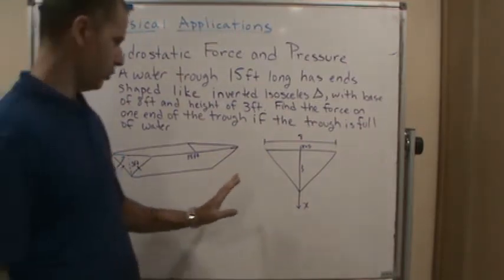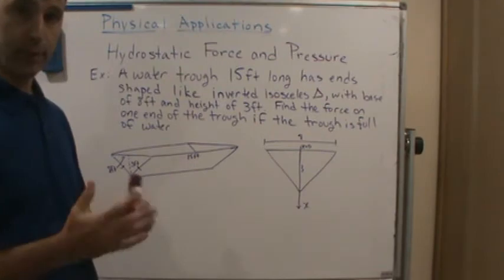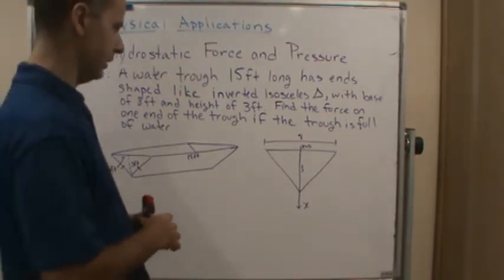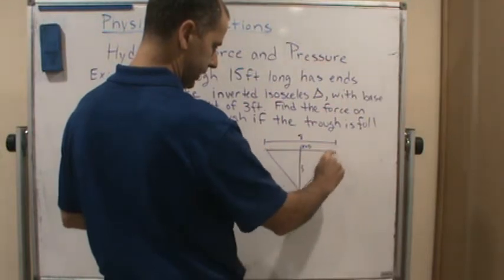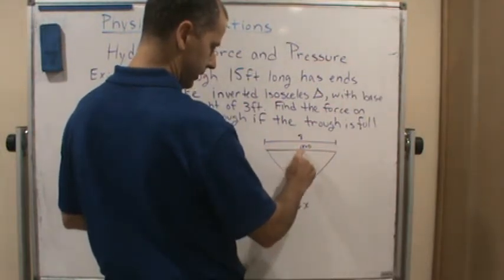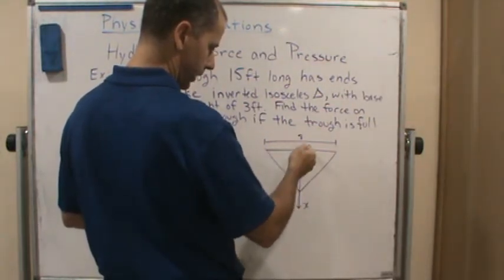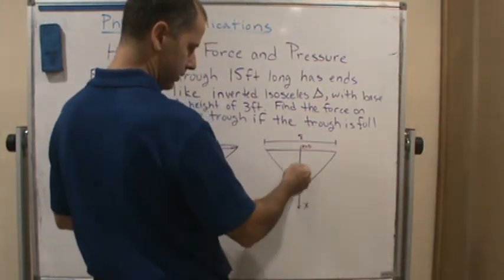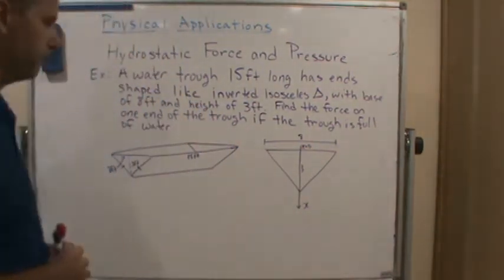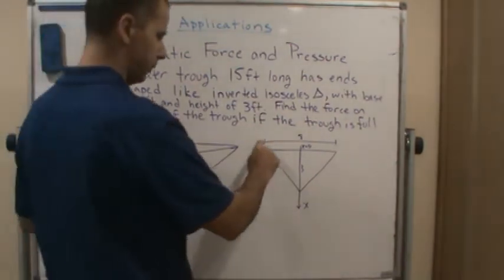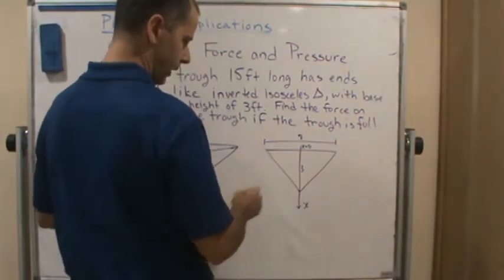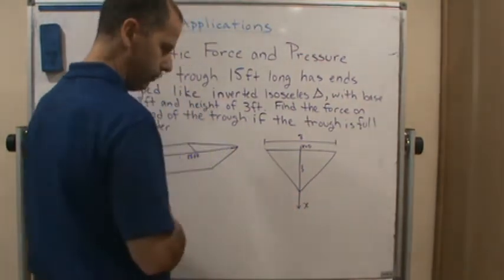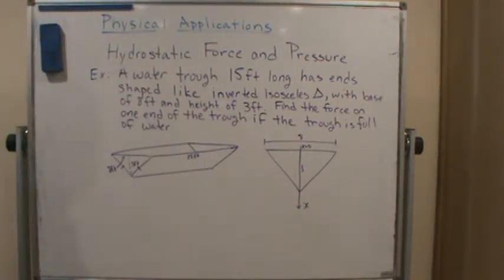And so then I drew the end here with my frame of reference. So I'm going to make, since it's full of water, I'm going to have my x equal to 0 right here at the top of the trough, and then the depth going down is going to be positive. And so then I labeled the base here is 8 feet and the depth of the trough, which is the height of the triangle, is 3 feet.